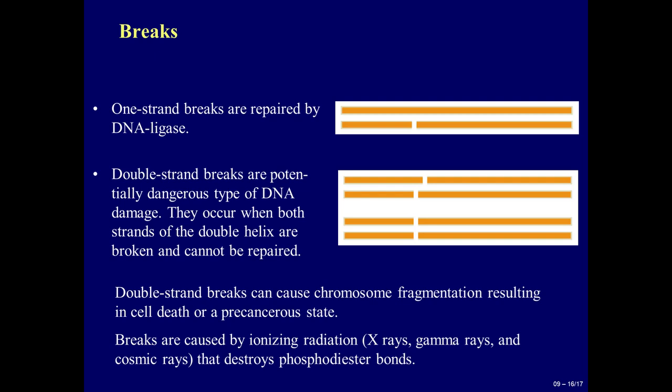Breaks. Single-strand breaks are repaired by DNA ligase. Double-strand breaks are a potentially dangerous type of DNA damage. They occur when both strands of the double helix are broken and cannot be repaired. Double-strand breaks can cause chromosome fragmentation, resulting in cell death or a precancerous state. Breaks are caused by ionizing radiation — X-rays, gamma rays, and cosmic rays — that destroys phosphodiester bonds.